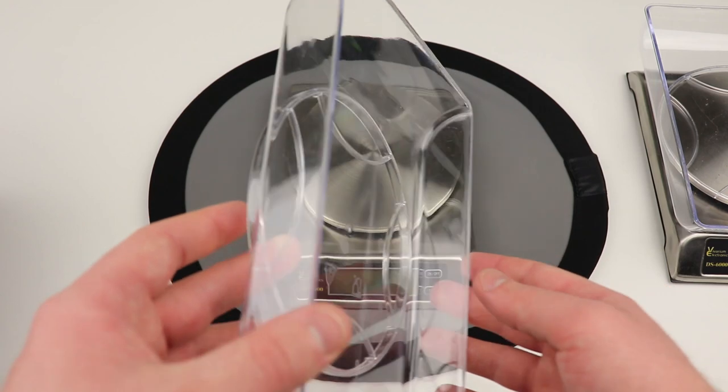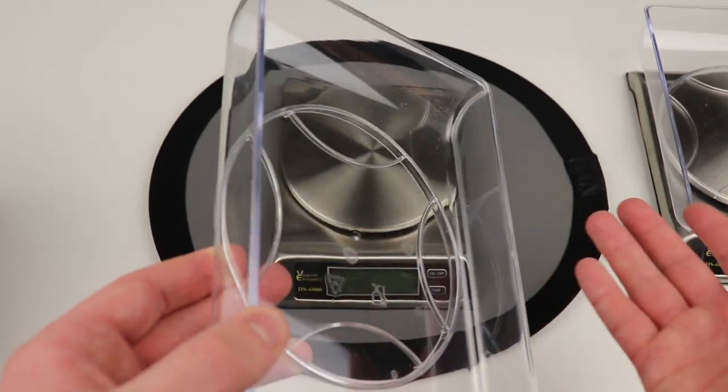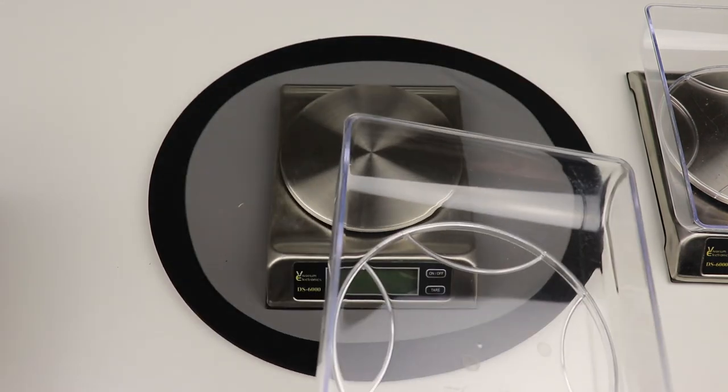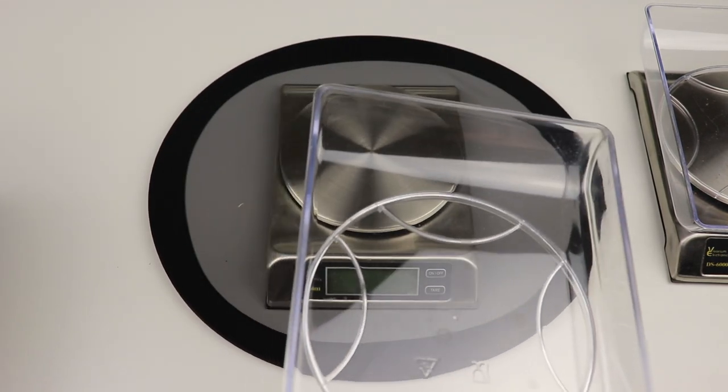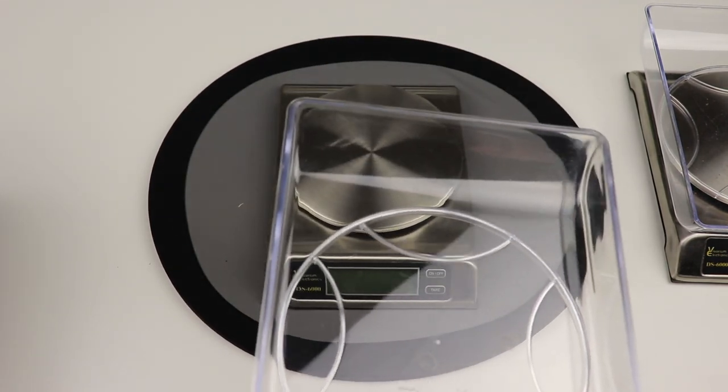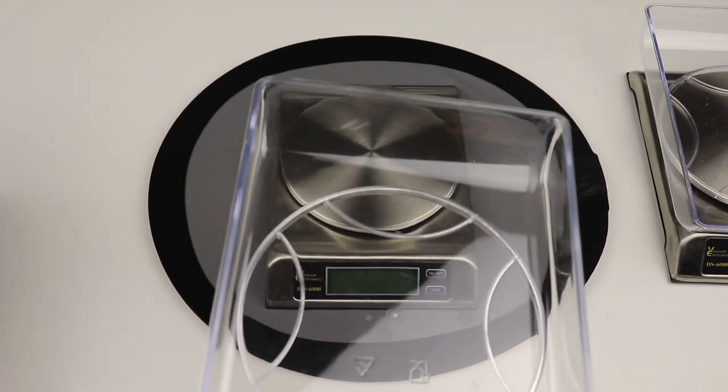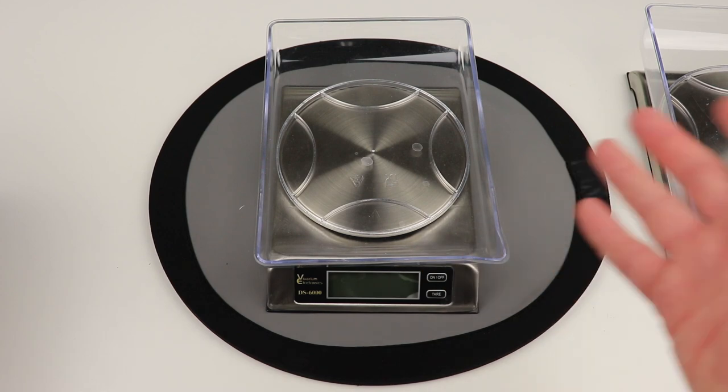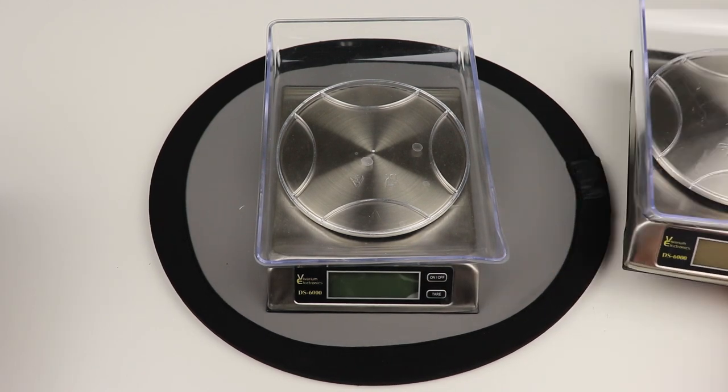But the great thing about this is they've actually included one of these, which is kind of like an acrylic plate to sit on this. So if you have smaller animals like geckos or amphibians that have a tendency for small particles of the bedding to actually stick to them, all you have to do is set this on here and this is going to catch all of the bedding.